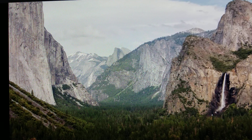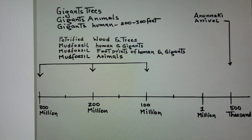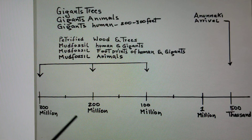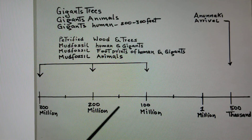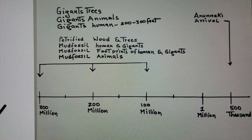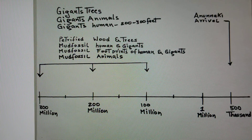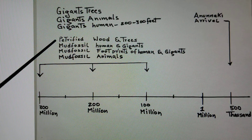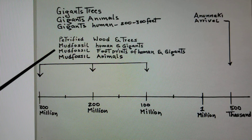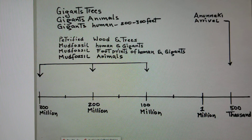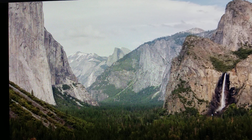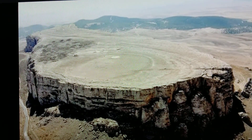I'm going to show you my chart. A long time ago there was a civilization — a planet of giants — from 100 million to 300 million years ago. Everything was giant: giant trees, giant animals, giant humans, maybe 200 to 300 feet tall or taller. The evidence is petrified woods, mass fossils of human giants, mass fossils of footprints, and mass fossils of animals. Going back to my chart, I'm going to show you evidence of the big giant trees — you can tell they're huge.